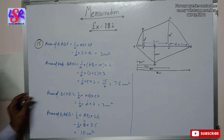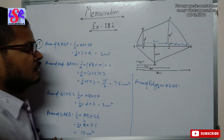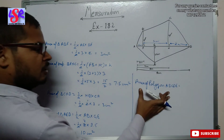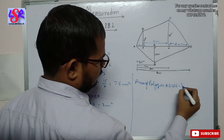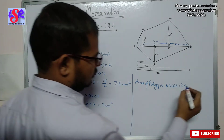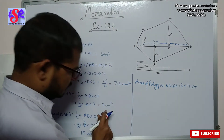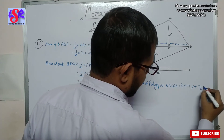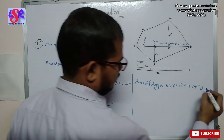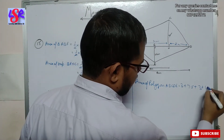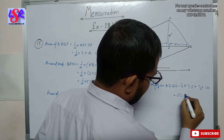To get the area of the whole polygon we add all the areas. Area of polygon ABCDE equals 3 plus 7.5 plus 3 plus 10, and the sum of all of these is 23.5 square centimeters.